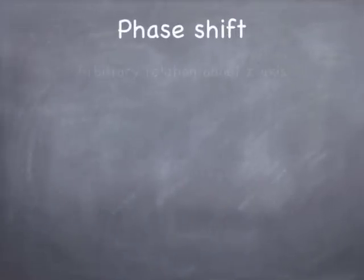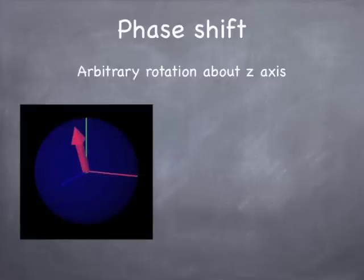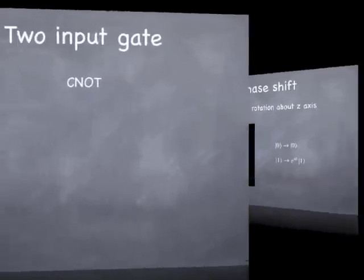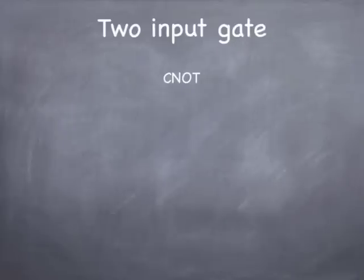The final gate that might be useful is an arbitrary rotation about the z-axis, which means we're changing the relative phase of the |0⟩ and |1⟩ components.